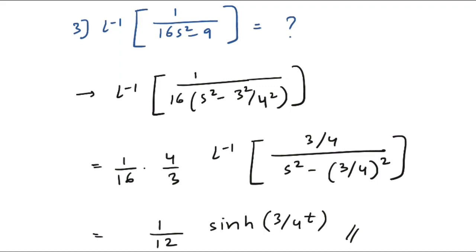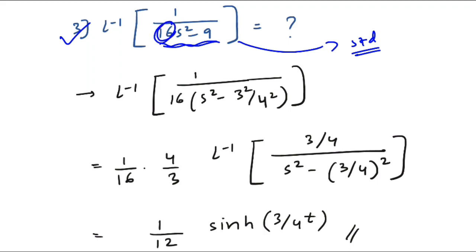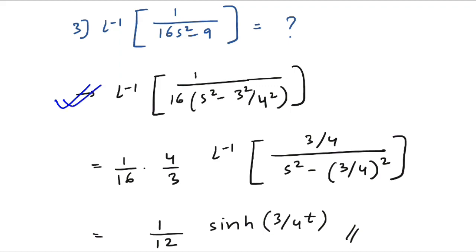In example 1 we saw the linearity property, and in example 2 the shifting property in inverse Laplace transform. Now example 3: Laplace inverse of 1/(16s²−9). You don't know the standard answer directly, so you need to manipulate. The coefficient 16 is multiplied to s², so take 16 outside the bracket, giving 1/(16·(s²−9/16)).